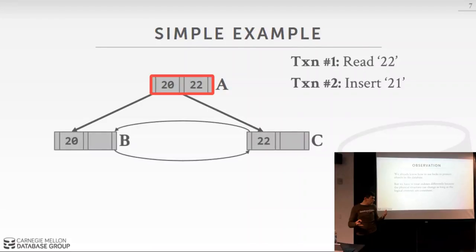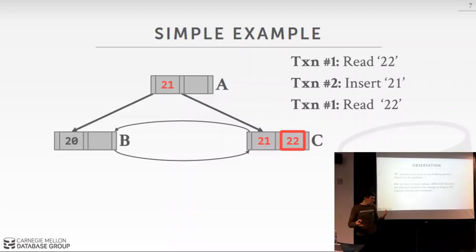Consider a simple B+ tree with a single node containing keys 20 and 22. Transaction one reads 22. Transaction two inserts 21, causing a split: key 20 moves to one node, key 22 to another. If transaction one comes back to look up 22, it's now in a different node — but the answer is the same. However, this means we can't store pointers to physical nodes as in Hekaton's approach.